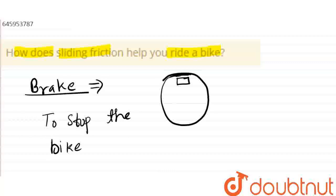Without sliding friction, the bike can't stop. If you can't stop, you can't ride safely. You have to be able to stop, apply brakes, and slow down.